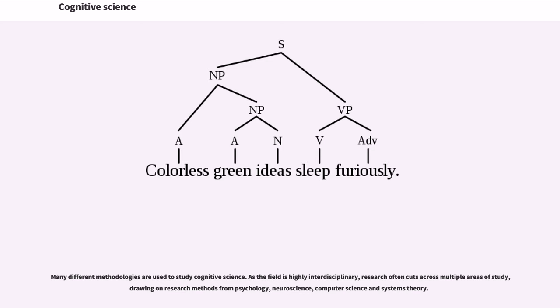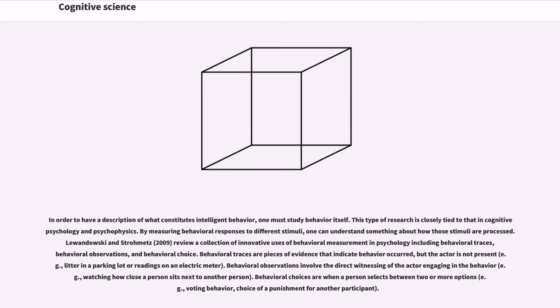Many different methodologies are used to study cognitive science. As the field is highly interdisciplinary, research often cuts across multiple areas of study, drawing on research methods from psychology, neuroscience, computer science and systems theory. In order to have a description of what constitutes intelligent behavior, one must study behavior itself. This type of research is closely tied to that in cognitive psychology and psychophysics. By measuring behavioral responses to different stimuli, one can understand something about how those stimuli are processed.